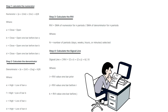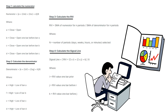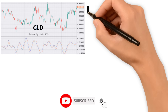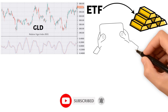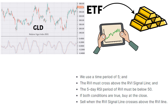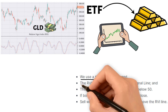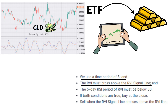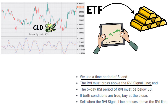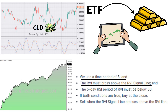Now, let's show you a Relative Vigor Index trading strategy. We back-tested the Relative Vigor Index on GLD, the ETF tracking the gold price, and the results are pretty good. The trading rules are simple yet effective. We use a five-day look-back period, and we buy GLD when the RVI crosses above the signal line. We also add a second condition: the five-day RSI of the Relative Vigor Index must be below 50. We sell when the signal line crosses above the RVI.